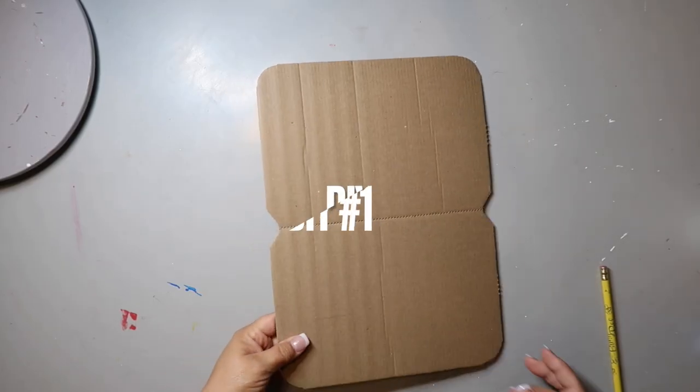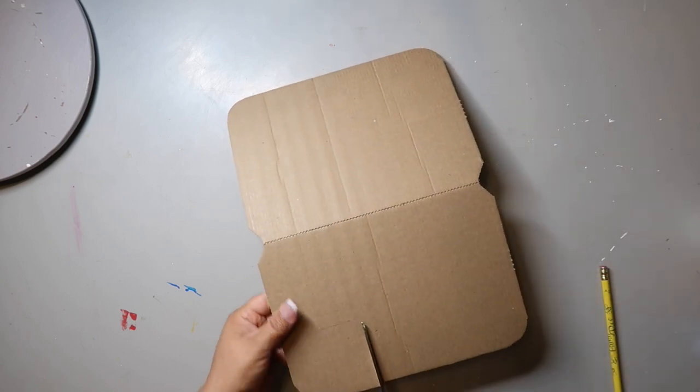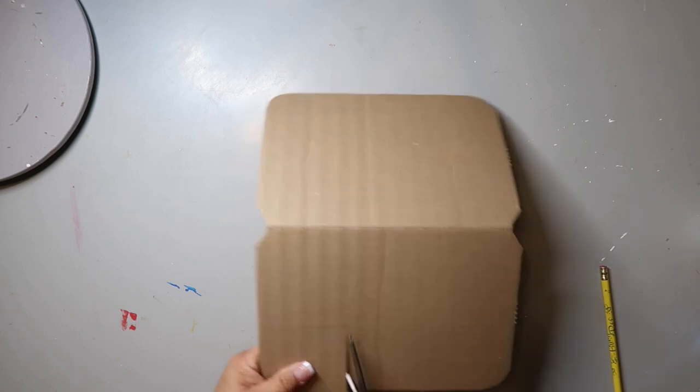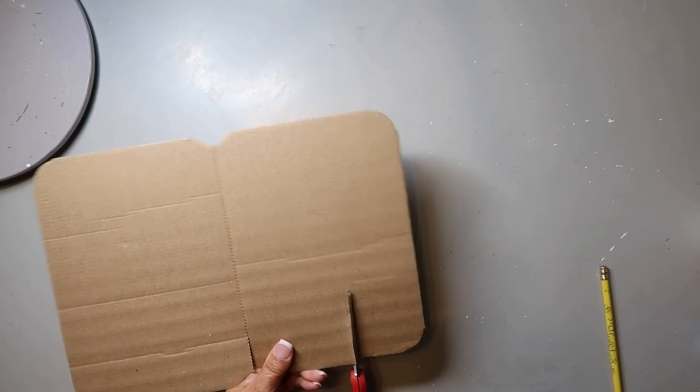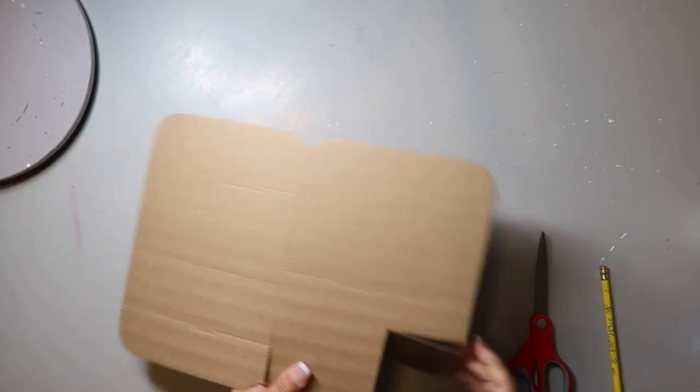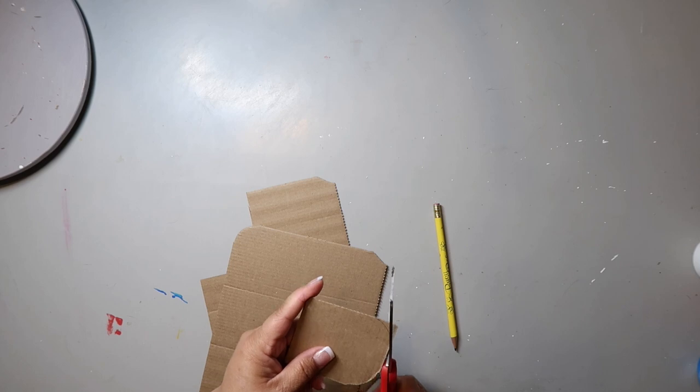Take some scrap cardboard - I got mine from a package that came in the mail. I'm cutting out a popsicle shape, not a rocket pop shape, just the regular popsicle shape. Then I'm going to use that shape as a template and cut out two more shapes.